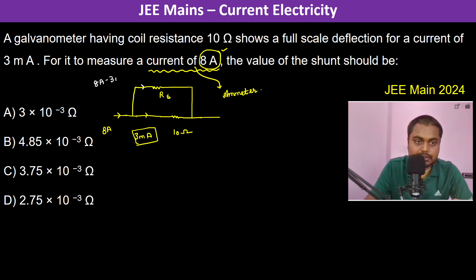So therefore how much current should be passing through the shunt resistance? It should be 8 ampere minus 3 milliampere. So 8 ampere minus 3 milliampere is basically equivalent to approximately equal to 8 ampere only, because 3 milliampere is quite negligible.